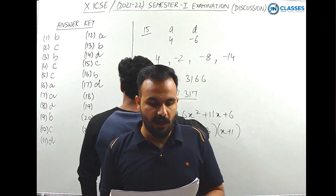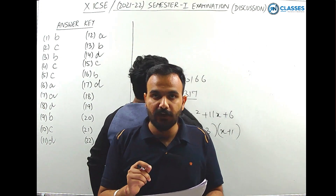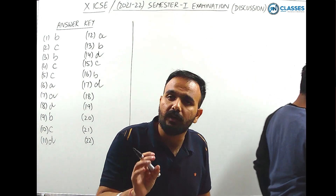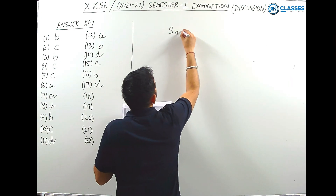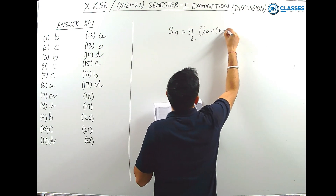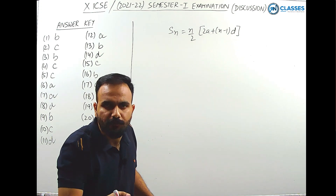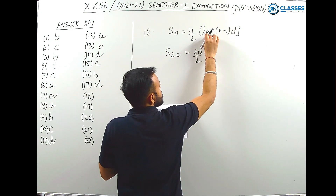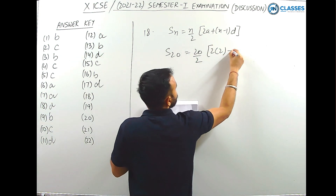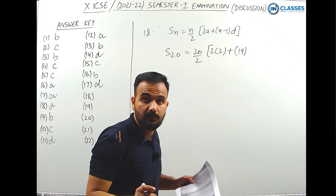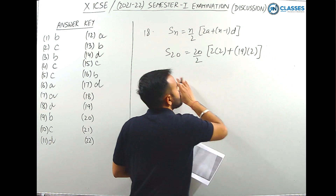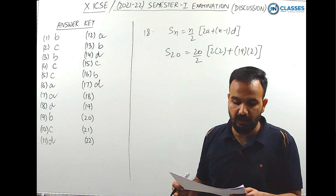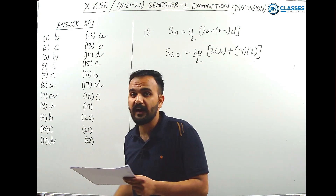Question 18: find the sum of the first 20 terms of the AP 2, 4, 6, 8, ... Using the formula S_n = n/2 × (2a + (n-1)d), with n=20, a=2, d=2: S₂₀ = 20/2 × (2×2 + 19×2) = 10 × (4 + 38) = 10 × 42 = 420. Option C is the right answer.